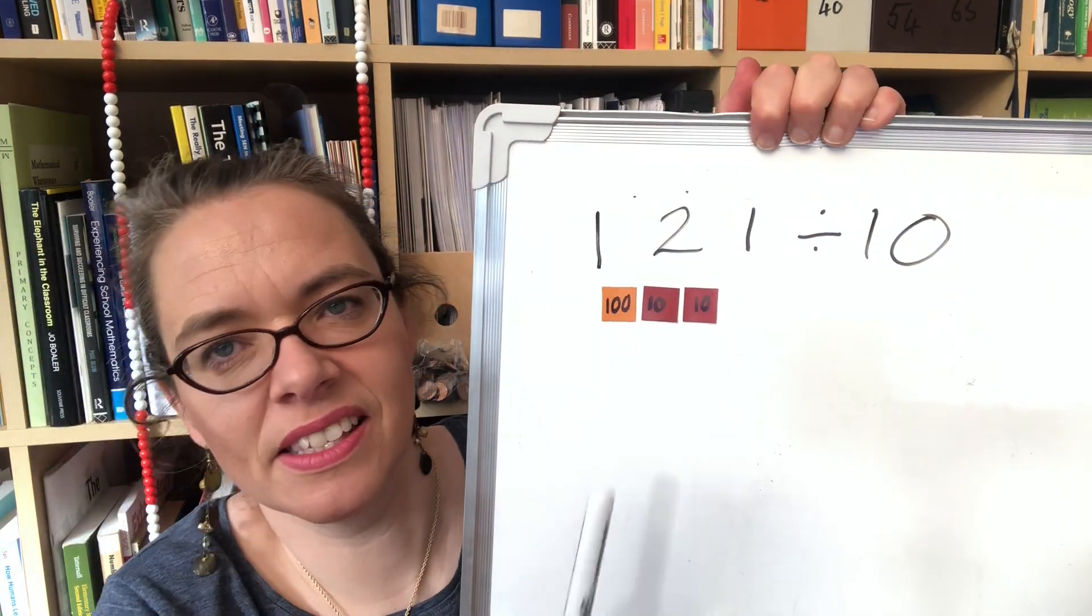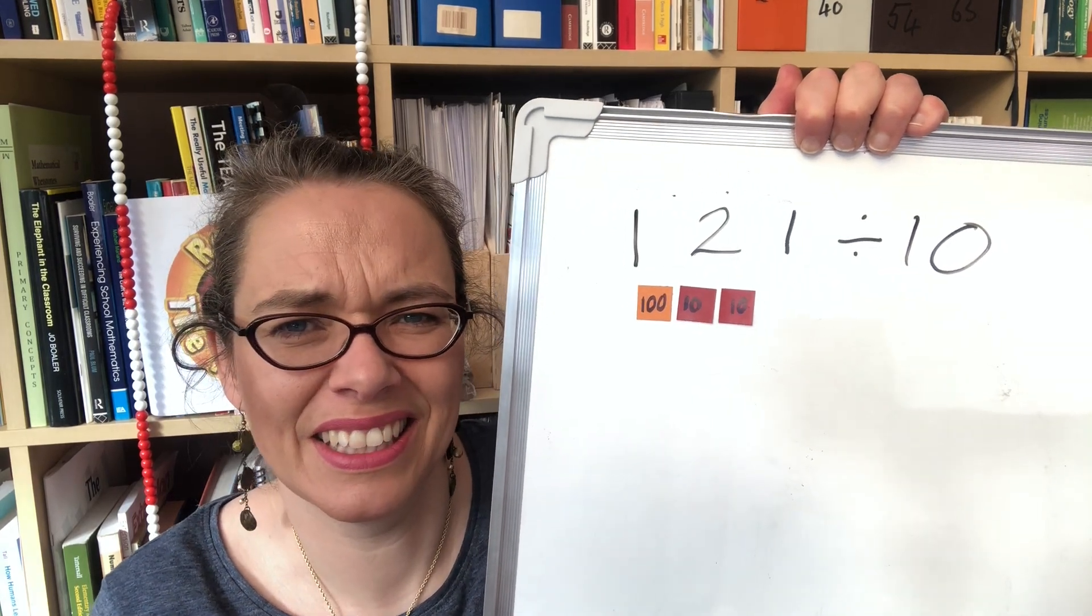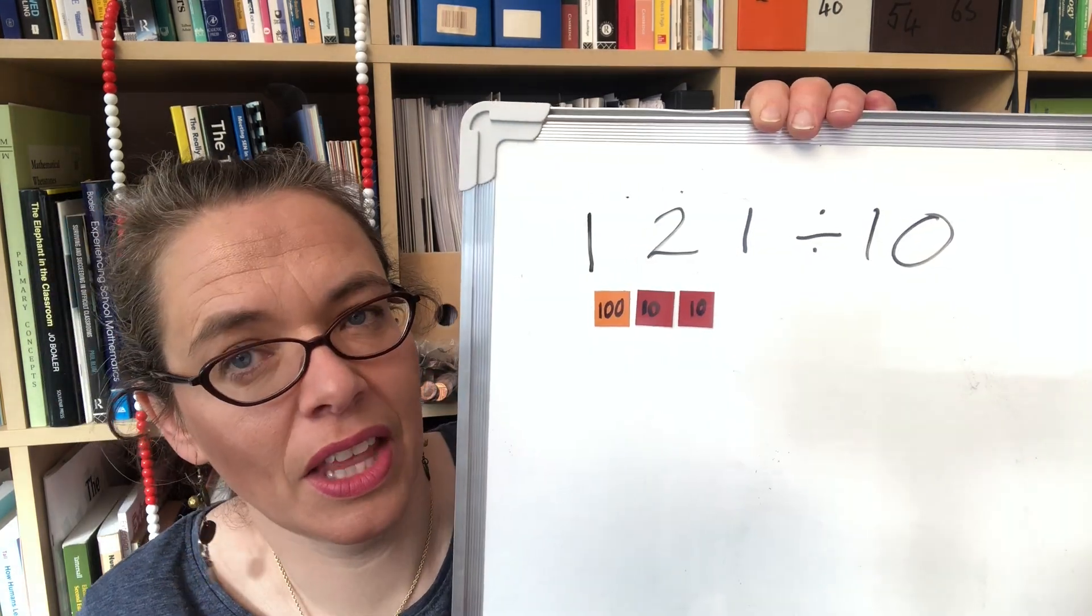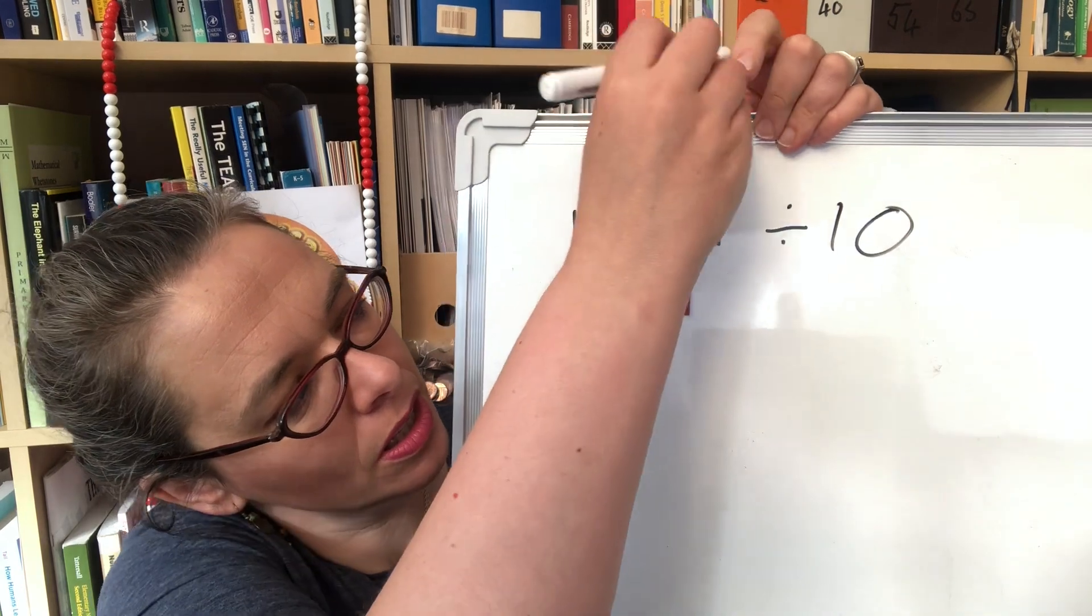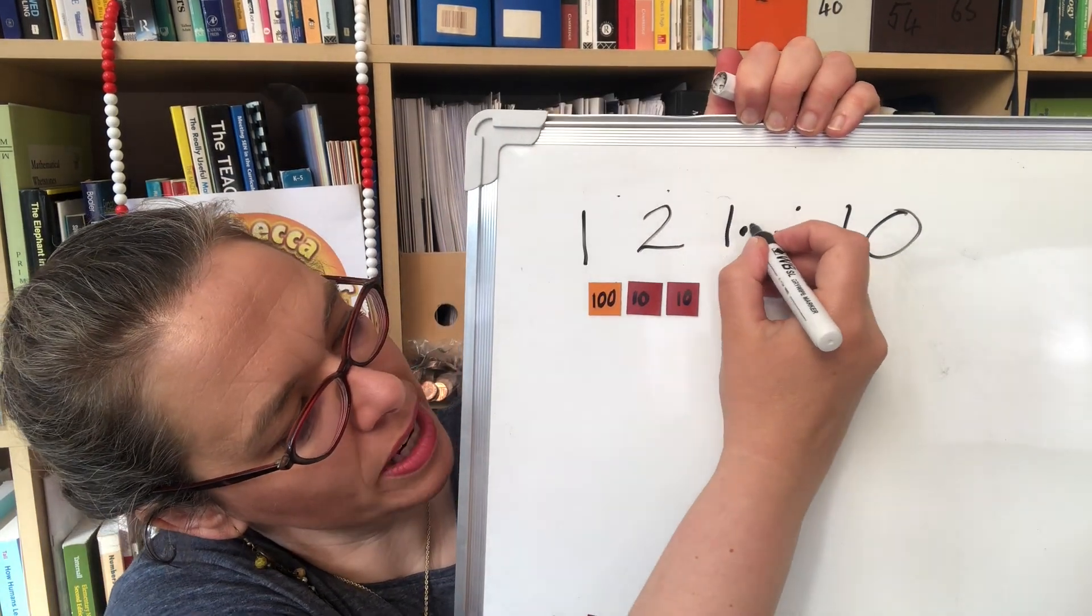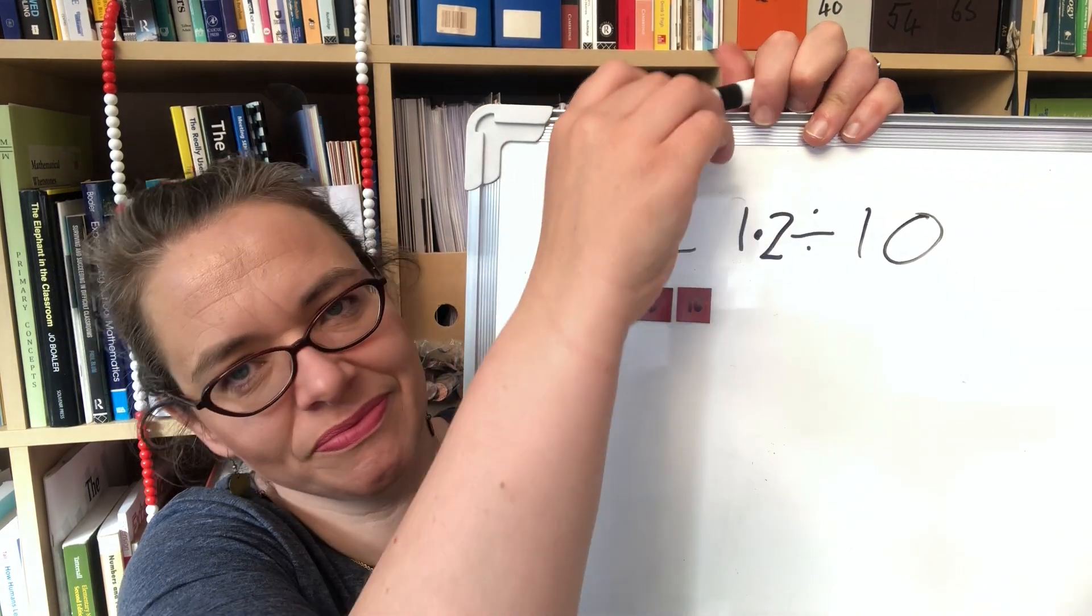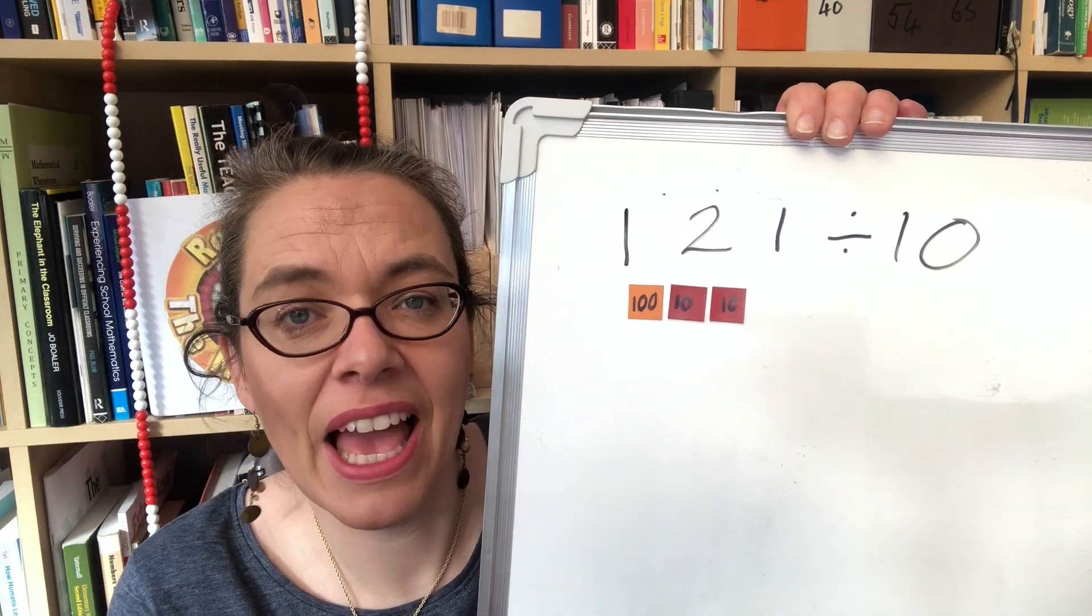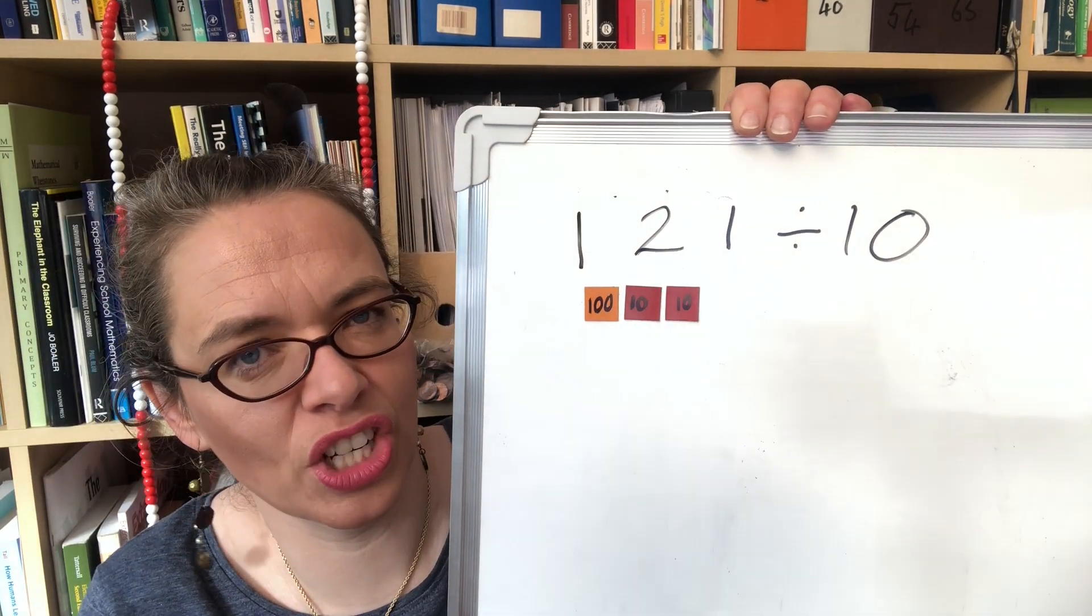How many tens in 121? Well you get a remainder so it's becoming much more tricky and that becomes even more true if we had say 120.2 divided by 10.